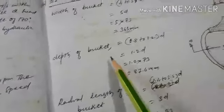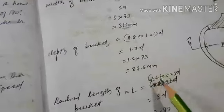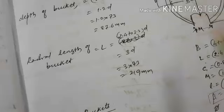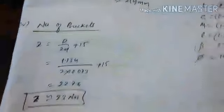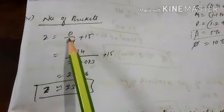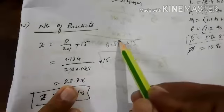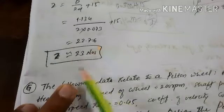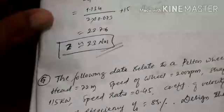Depth of bucket c = 0.8 to 1.2 times d; taking 1.2d gives the depth. Radial length L = 2.4 to 3.2 times d; taking 3.2d gives the radial length. Number of buckets z = (D/2d) + 15 = 0.5m + 15, where m = D/d is the jet ratio. This gives an optimum number of 23 buckets on the wheel.